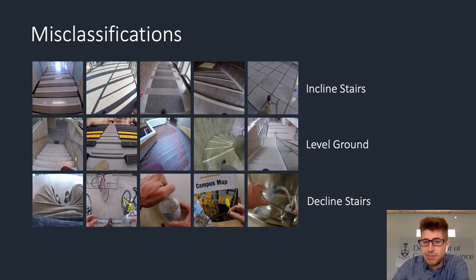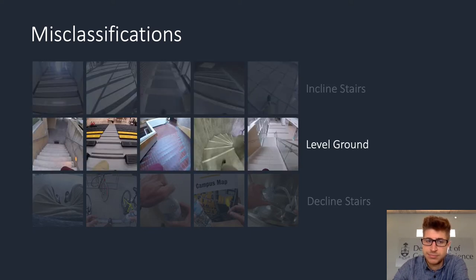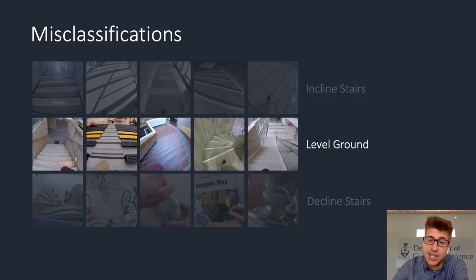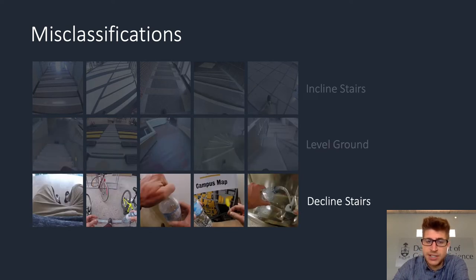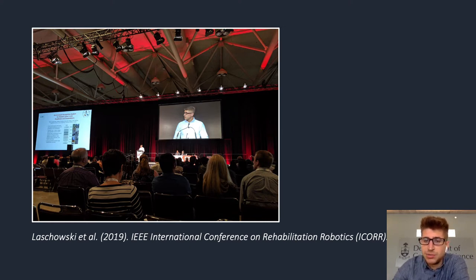Here are some interesting examples where our deep learning model misclassified the walking environment. The images in the top row were misclassified as incline stairs, presumably because of the horizontal line features throughout the image. The images in the middle row were misclassified as level ground terrain — these examples highlight the importance of accurate environment classification for safety, since a misclassification could potentially cause a patient to fall down a flight of stairs. The miscellaneous images in the bottom row were misclassified as decline stairs. We presented this preliminary system at the 2019 I-Corps conference, where we established the feasibility of using deep learning for this new computer vision application.